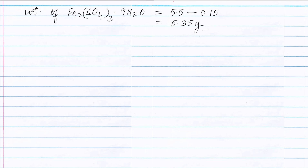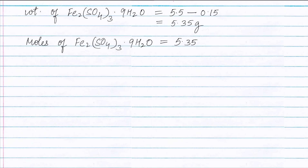Therefore, moles of Fe2(SO4)3·9H2O equals weight divided by molecular weight of Fe2(SO4)3·9H2O, which is 562 grams. This equals 5.35 divided by 562, giving 0.0095 moles.